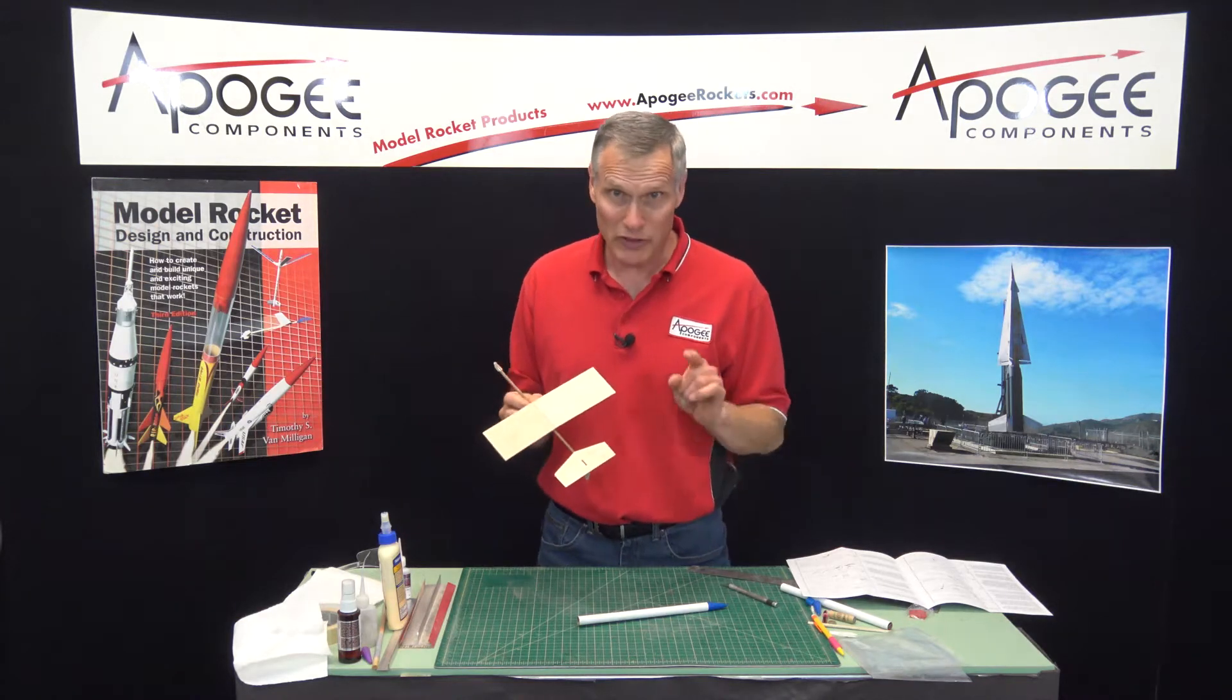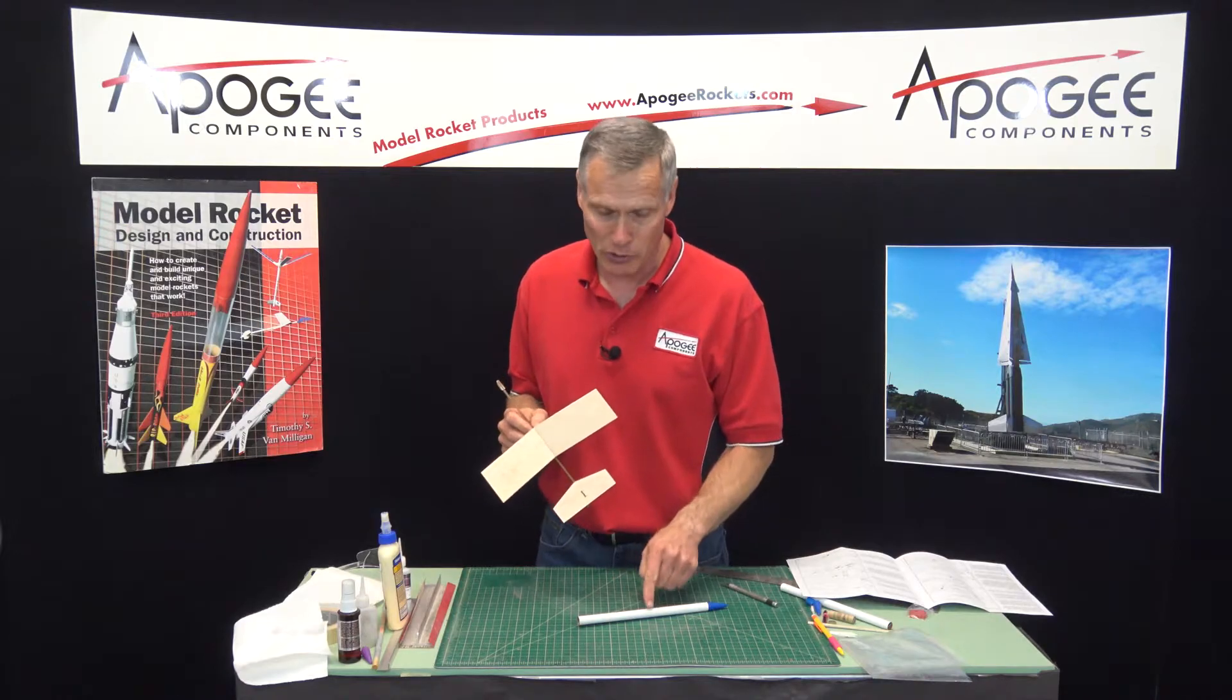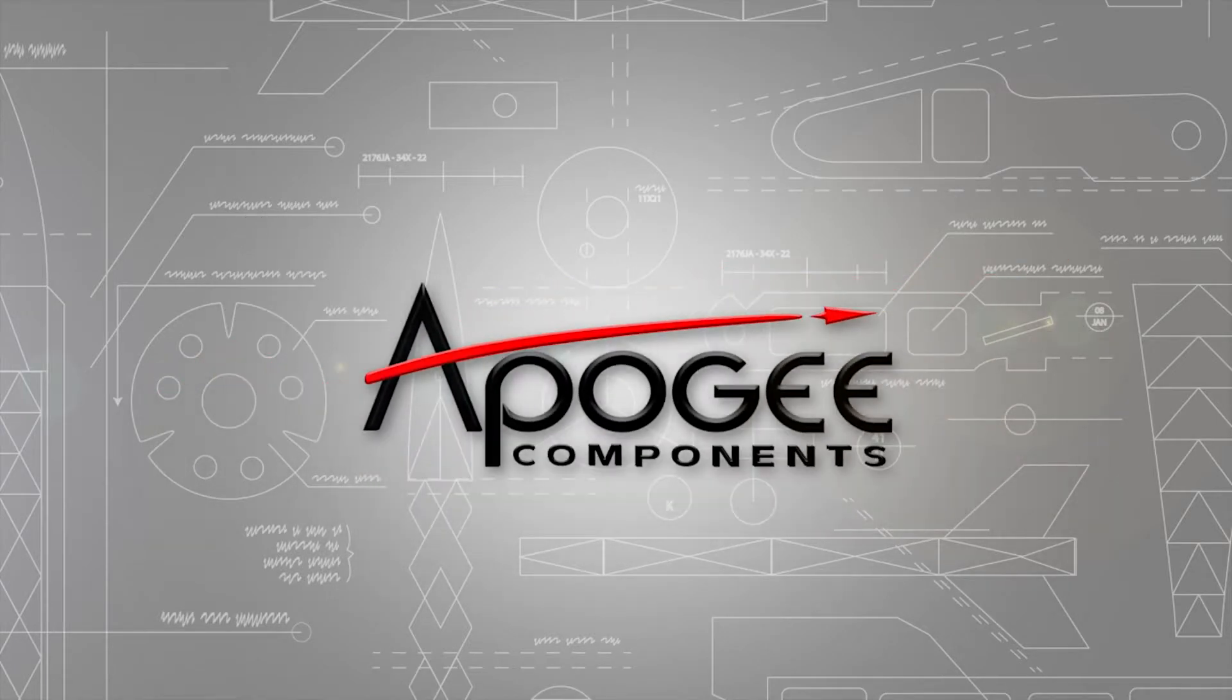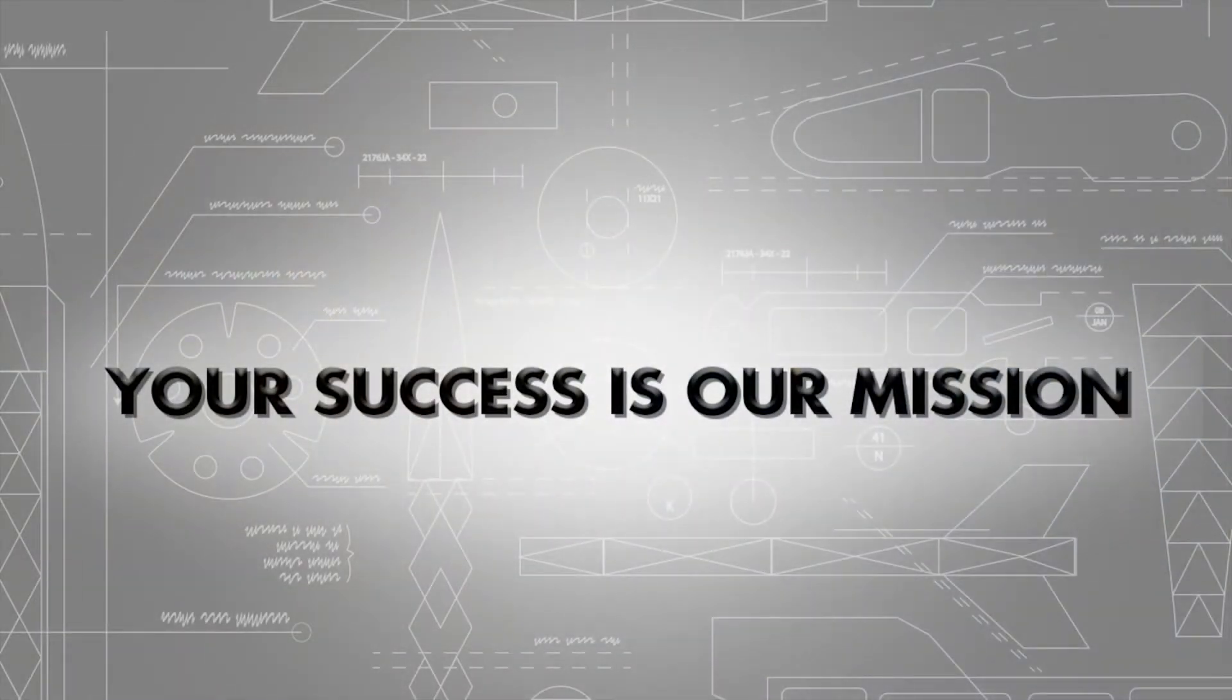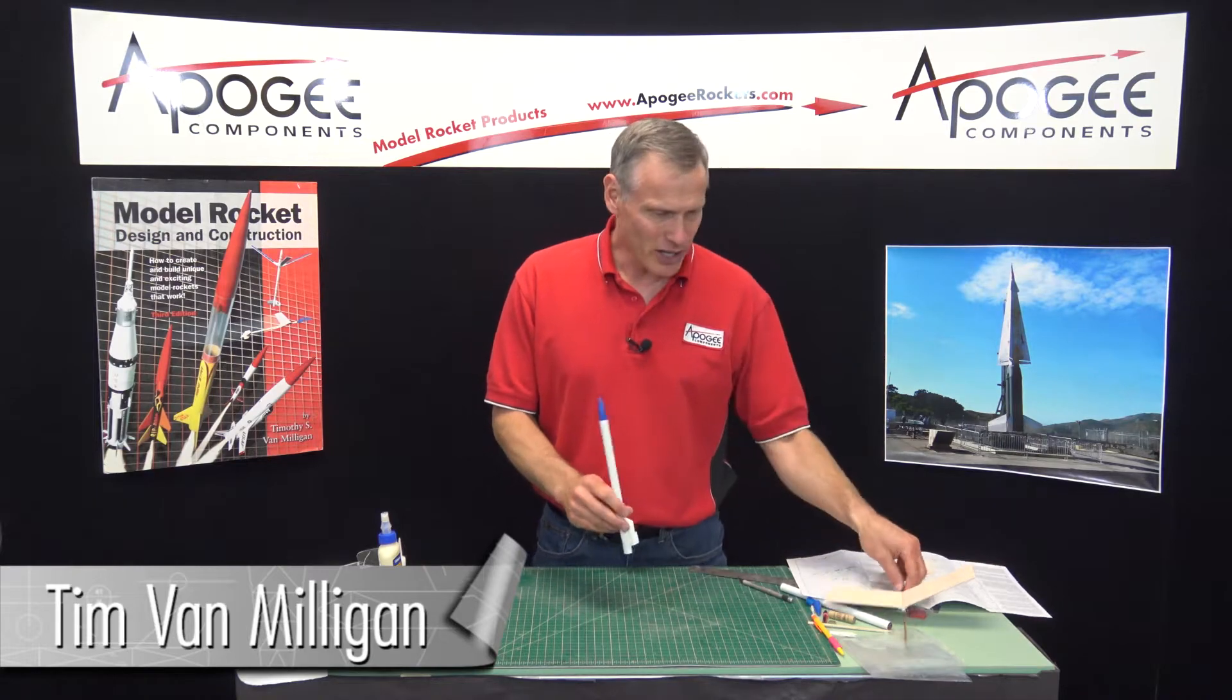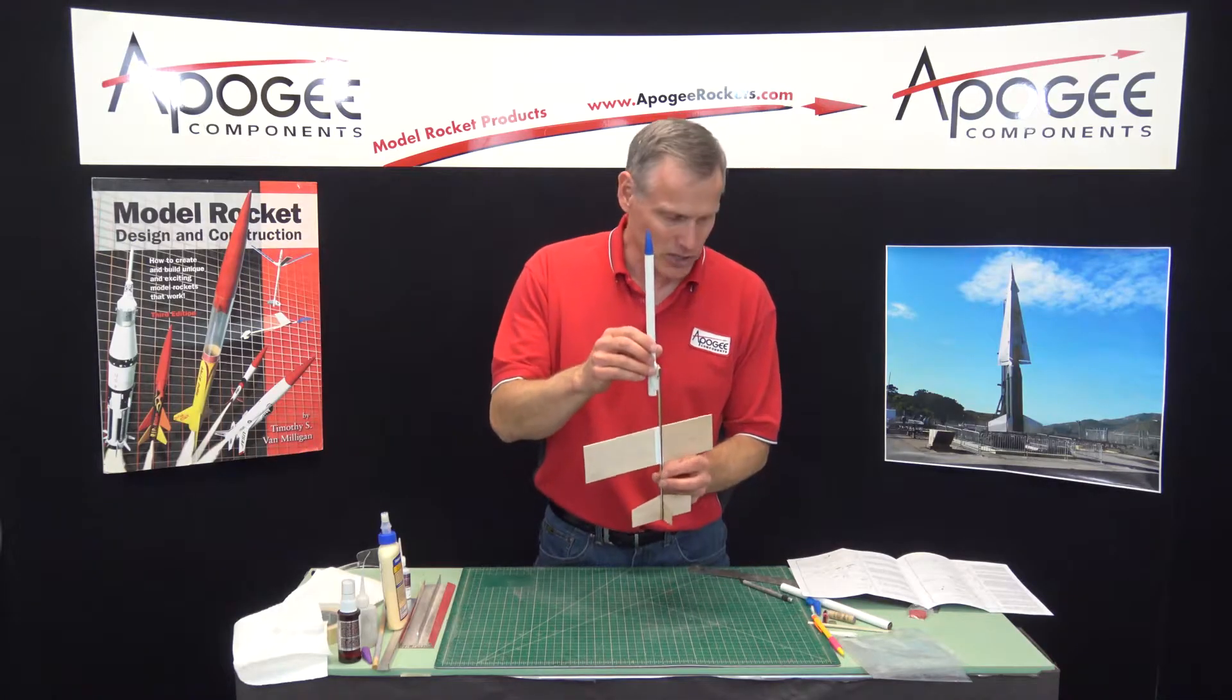We're in the construction of the Mini Condor Boost Glider in this episode, and today we're going to build the Pop Pod that carries the rocket up into the sky. Hi, I'm Tim Van Milligan from Apogee Components. Today we're building the Pop Pod that attaches to the front of the glider and carries it up into the sky.